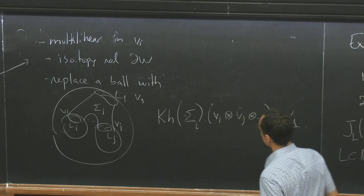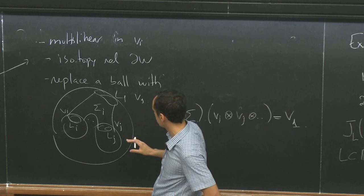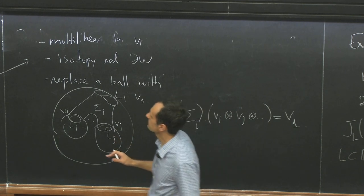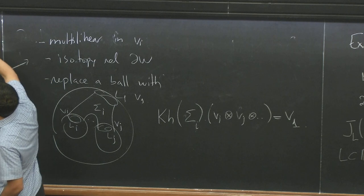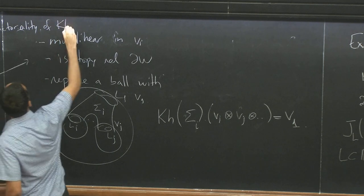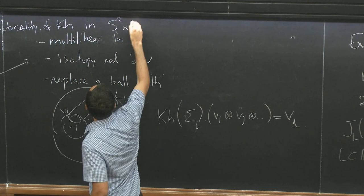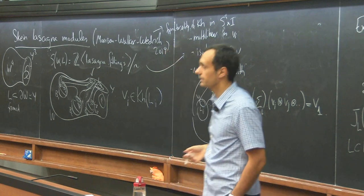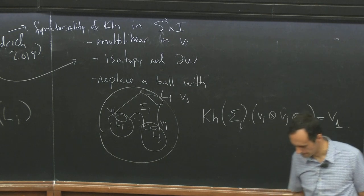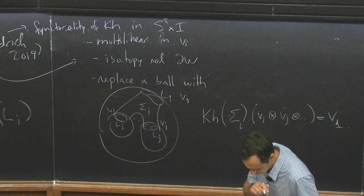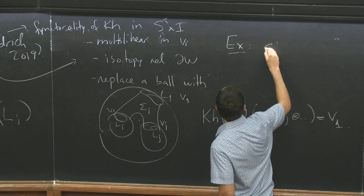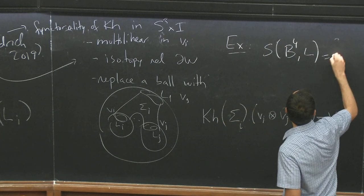Okay. So basically you're dividing by local relations in Khovanov homology, meaning cobordism relations of this form. All right, there is something slightly interesting here. So this is in S3 minus some balls. If you want to make sure that Khovanov homology is functorial under this.